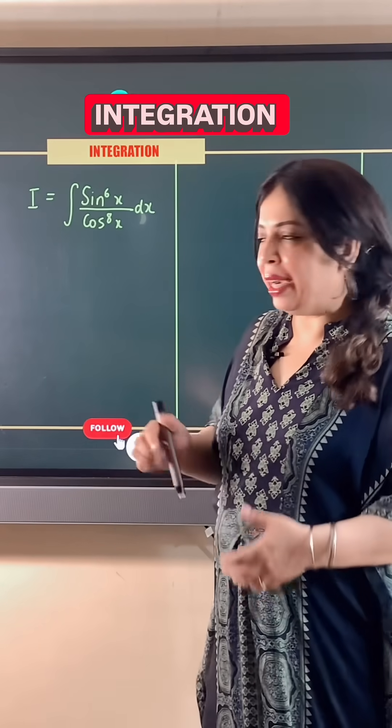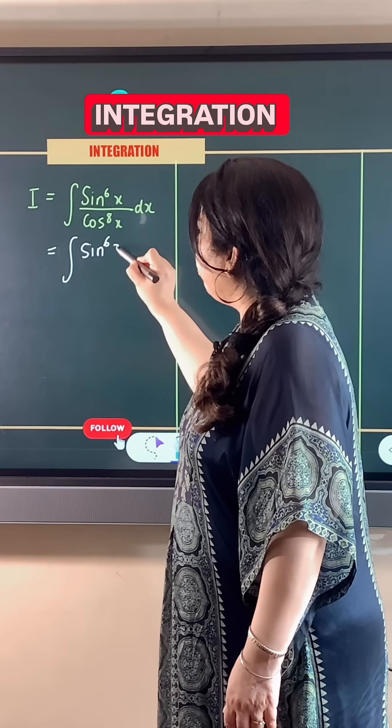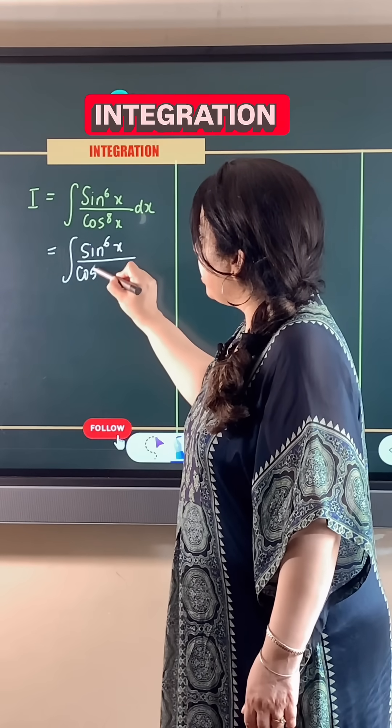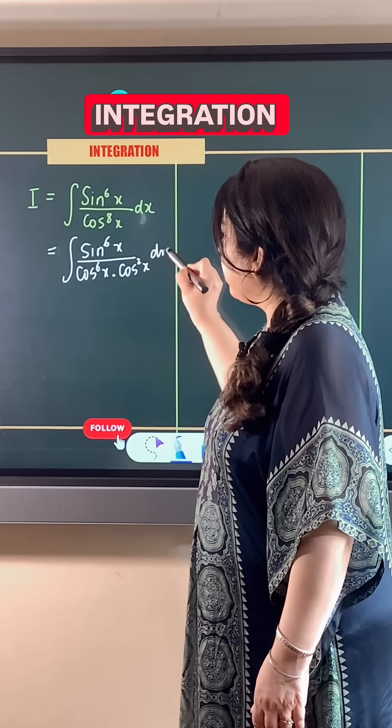First of all, I am rewriting the denominator as the product of cos raised to power 6x multiplied by cos square x dx.